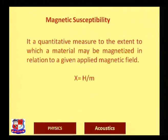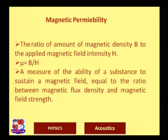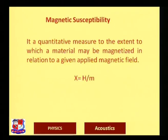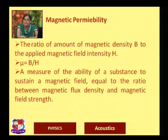Magnetic susceptibility (χ) is a quantitative measure of the extent to which a material can be magnetized. Chi is the ratio of M to H. Magnetic permeability is the ratio of magnetic flux density B to applied external magnetic field H — μ = B/H. It is the measure of the ability of a substance to sustain a magnetic field. Magnetic susceptibility measures how easily it is magnetized; magnetic permeability measures the ability to sustain that field.